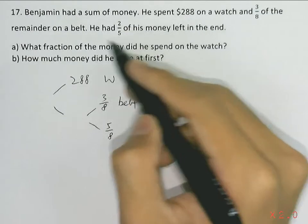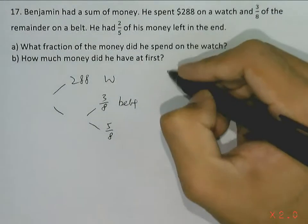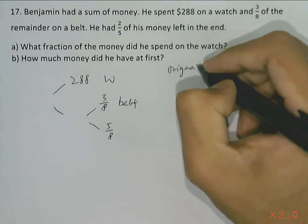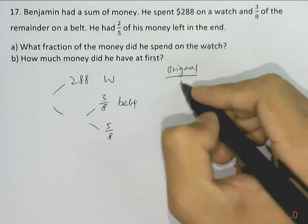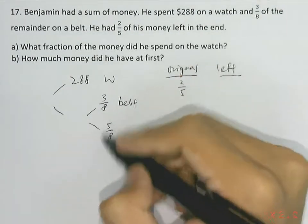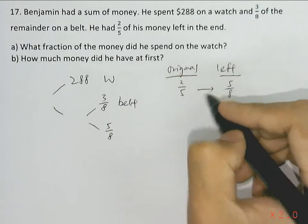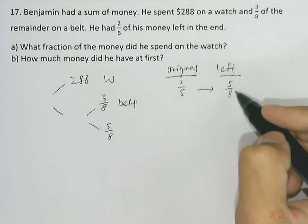In the end, he had 2/5 of his money left. So from here we know that out of the original amount of money, 2/5 of the original amount will be equal to 5/8 of what was left here. 2/5 of the original amount of money is equal to 5/8 of the amount of money left.